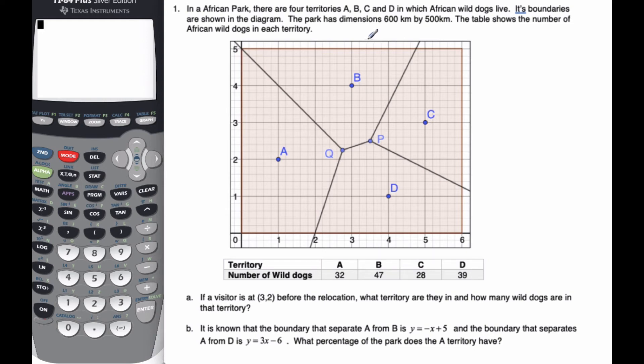Okay, so we're on the Voronoi diagrams, our second lesson again. In an African park, there are four territories A, B, C, and D in which African wild dogs live. African wild dogs are territorial and they travel in packs. The boundaries are shown in the diagram, so it's a Voronoi diagram here. The park's dimensions are 600 kilometers by 500 kilometers, and the shaded region is the actual boundary of the park. The table shows the number of wild dogs in each territory.